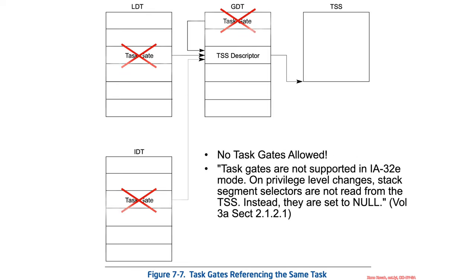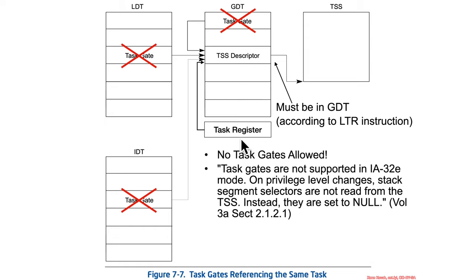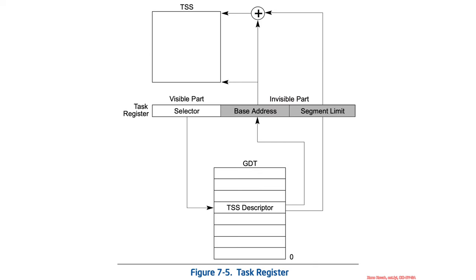From the picture in the Intel manuals, on 64-bit systems there is no such thing anymore as a task gate — that is simply not a thing. The task register points at some TSS descriptor, which can only be found in the GDT according to the LTR instruction. Even though this is just a segment selector, the instruction that loads it specifies it must be in the GDT. Task gates are reserved in 64-bit mode.